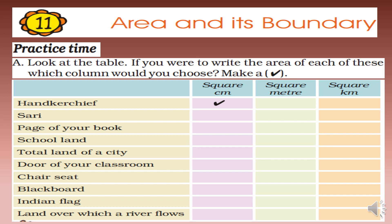Let us start. Handkerchief comes in square centimeter. Page of your book will be square centimeter. School land will be square kilometer. Total land of the city will also be square kilometer. Door of your classroom will be square meter. Chair seat is square centimeter. Blackboard is square meter. Indian flag is square centimeter.